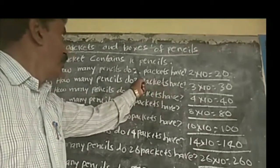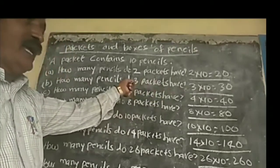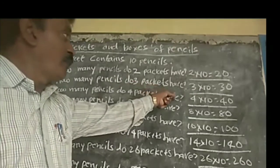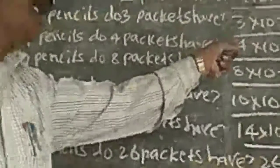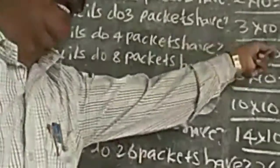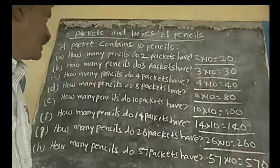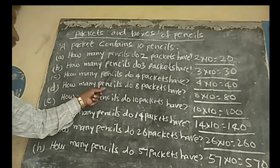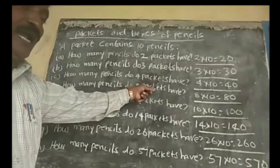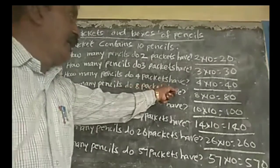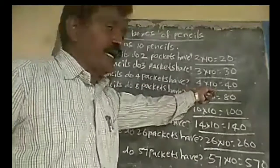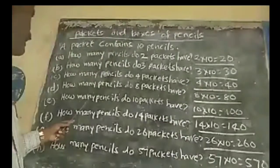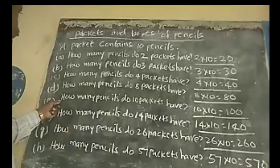One packet has 10 pencils, so 2 packets: 2 into 10, 2 tens are 20 — 20 pencils. Next, how many pencils do 3 packets have? 3 into 10, 3 tens are 30 — 30 pencils in 3 packets.